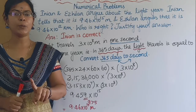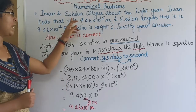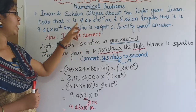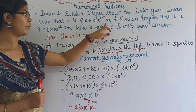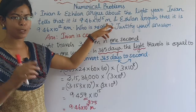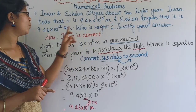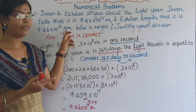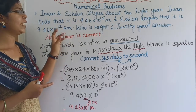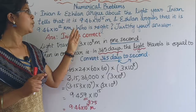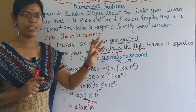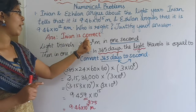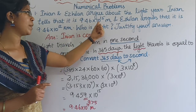That is the first question of numerical problems. This is an argument about a light year. What I am saying is that 9.46 × 10¹⁵ meters is the value of a light year. The value given by another person is 9.46 × 10¹² kilometers. What is the value of a light year? We have to justify the value of 9.46 × 10¹⁵ meters.